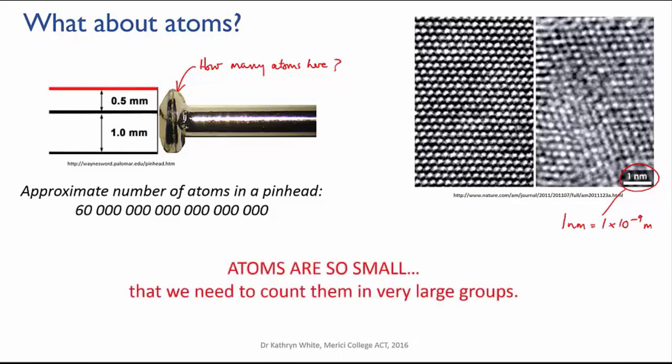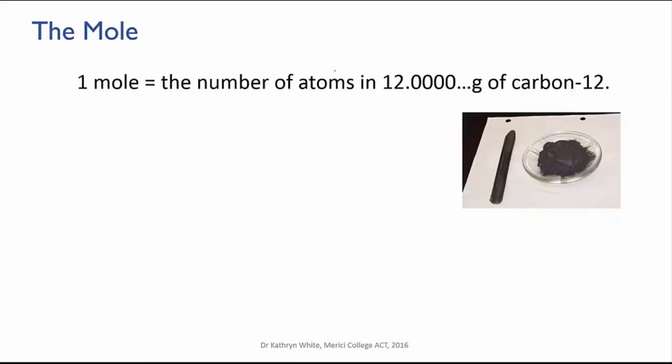Okay, so clearly we need a really big number if we're going to skip count atoms because atoms are so small. Now a lot of work was done on this in the 19th and early 20th centuries, and it was eventually determined to use the isotope carbon-12 as a standard.